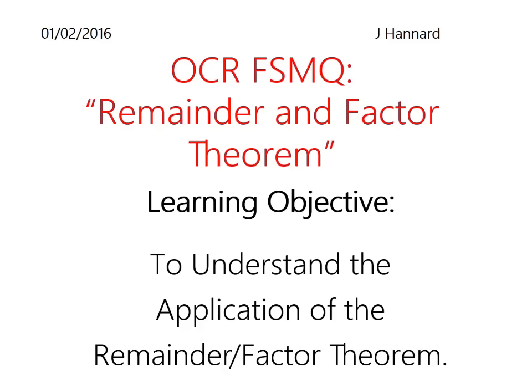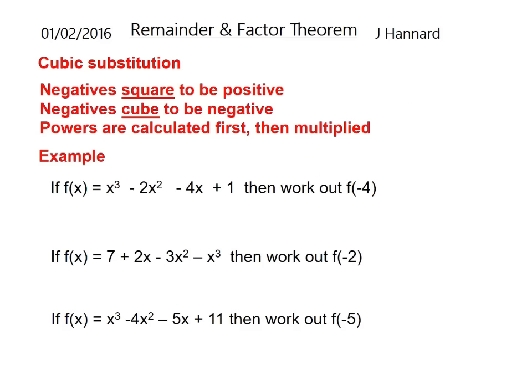The learning objective today is to understand the application of the remainder and factor theorem. Just a note before we start: with cubic substitution, negatives always square to be positive. Everything on this earth squares to be positive. There's nothing that squares to be negative. But negatives cube to be negative again, so it flip-flops with the odd and even powers. If you ever power something to an even number it'll be positive, but with an odd power it'll keep its sign. Powers are calculated first, then multiplied.